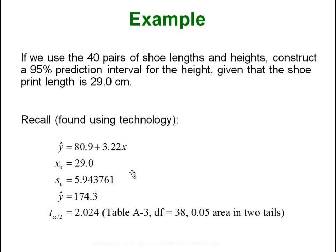We can go back to our simple example of the dataset that we used before: the 40 pairs of shoe lengths and heights, and we can construct a 95% prediction interval for the height of a person given that their shoe print is 29. If you remember from our lesson on regression, you'll remember that all we did was take 29, plug it into this equation, and we got a predicted height of 174.3. That was our single point predictor.